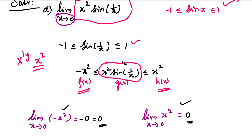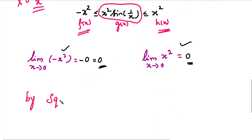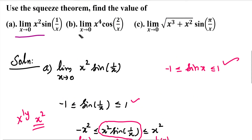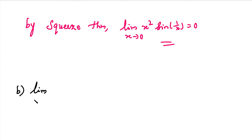So by the Squeeze Theorem, the limit of the middle function is also 0. That is, limit x tends to 0 of x² · sin(1/x) = 0. Now the second problem: limit x tends to 0 of x² · cos(2/x).